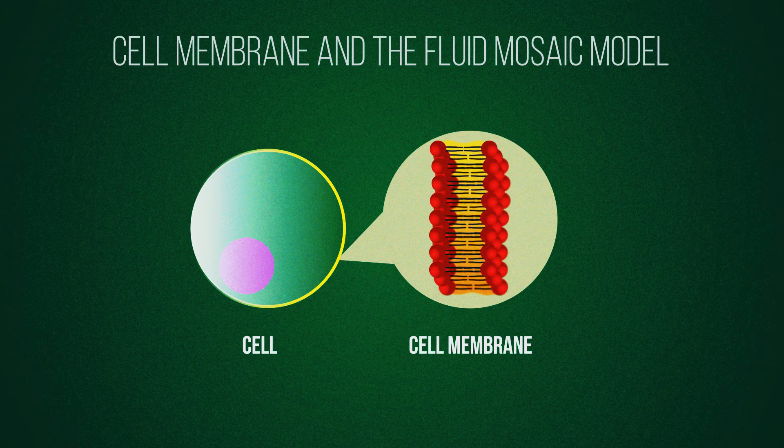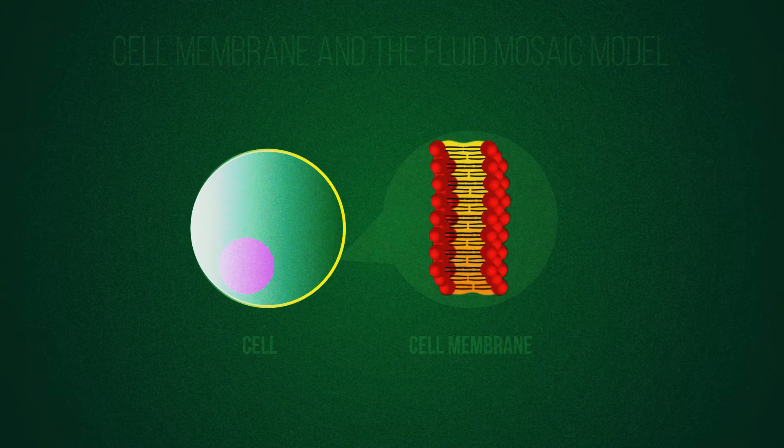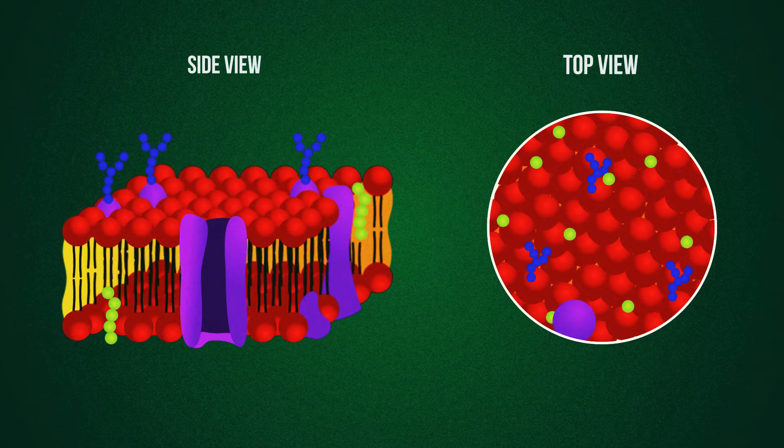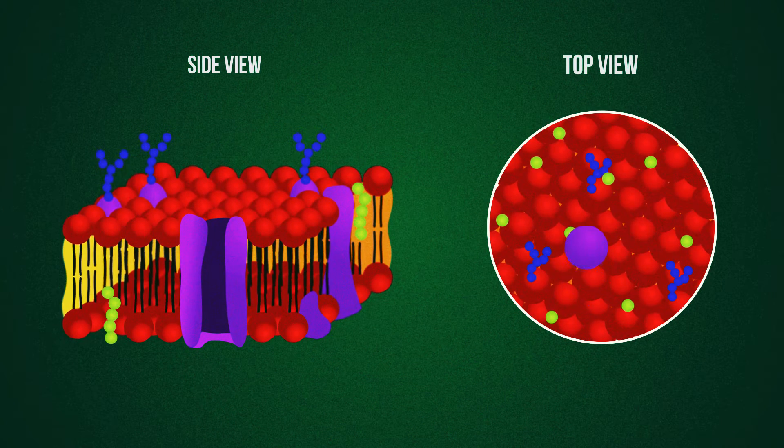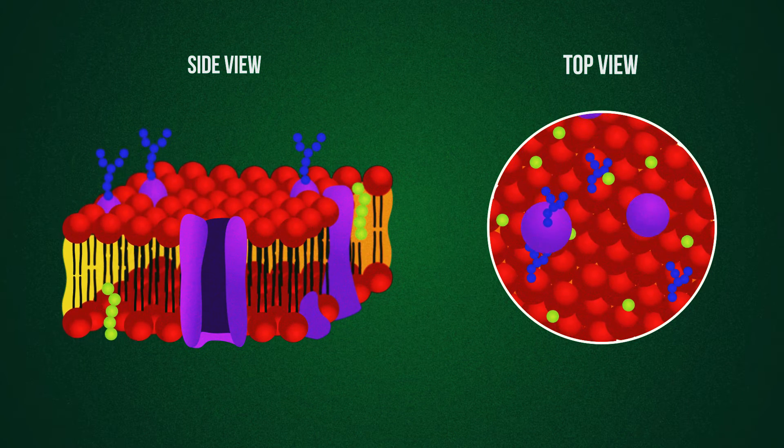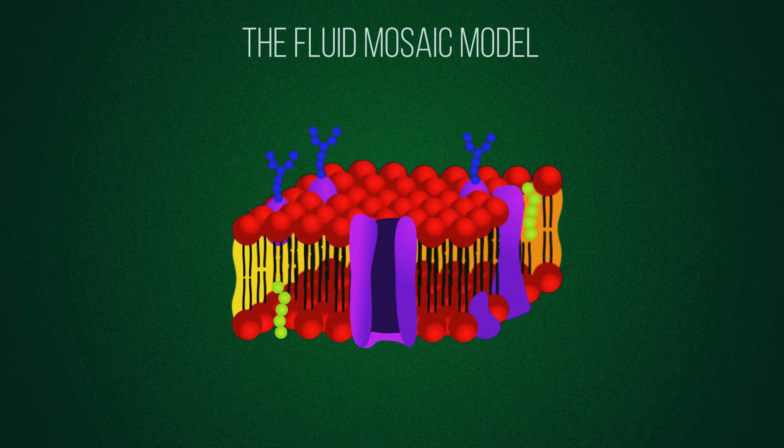In this video, we are going to look at the wonderful cell membrane in more detail. If you look at a cell membrane under a microscope, you would see a mosaic of different molecules moving around in a fluid way. Hence, scientists describe how membranes look and act as the fluid mosaic model.